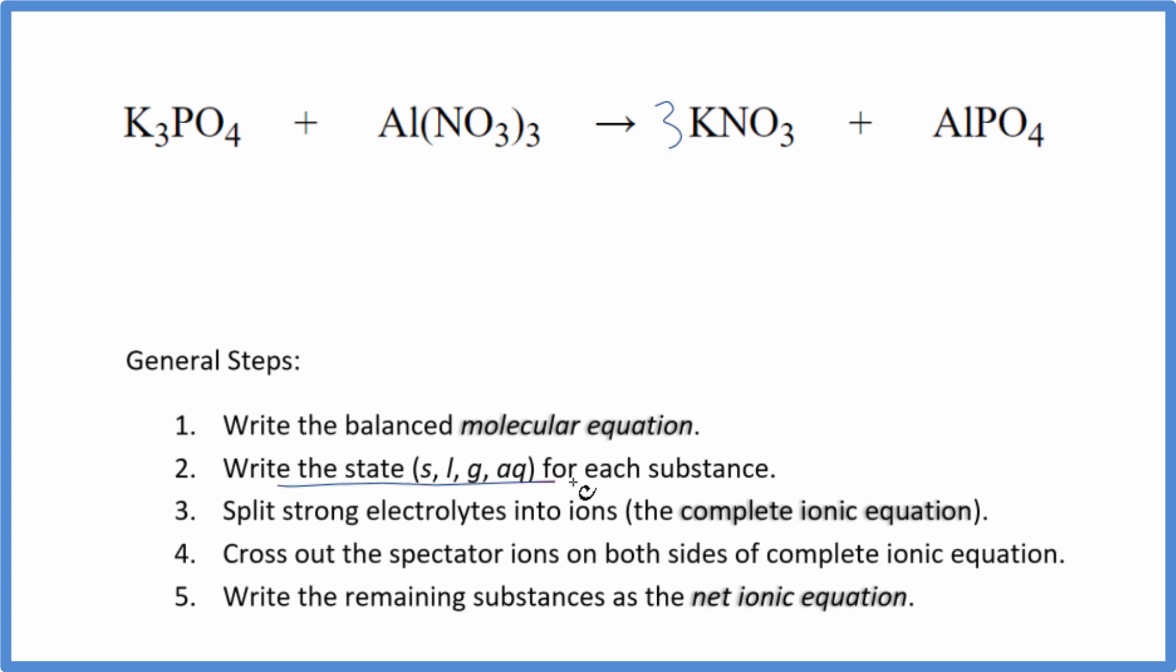Now we can write the states for each substance. Potassium compounds are very soluble. Even though phosphates in general are insoluble, potassium phosphate, that's going to be soluble, aqueous. Then aluminum nitrate, nitrates are very soluble. They'll dissolve, dissociate into their ions. Potassium nitrate, that's going to be soluble. And then this phosphate here, we said phosphates in general are insoluble. Aluminum phosphate, that's insoluble. So when these two substances react, this will be a solid. It'll be a precipitate. It'll fall to the bottom of the test tube in a precipitation reaction. So we have the states for our net ionic equation.